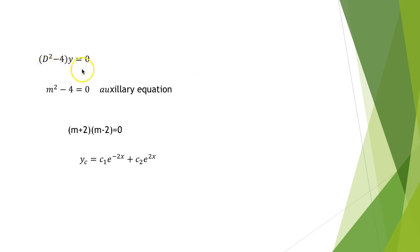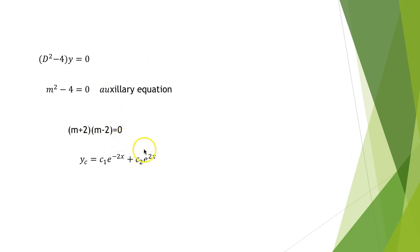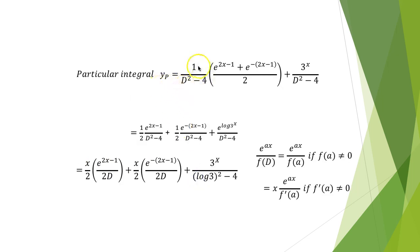The homogeneous equation is (D² − 4)y = 0. The auxiliary equation is m² − 4 = 0, or (m+2)(m−2) = 0. So the complementary function is c₁e^(−2x) + c₂e^(2x).